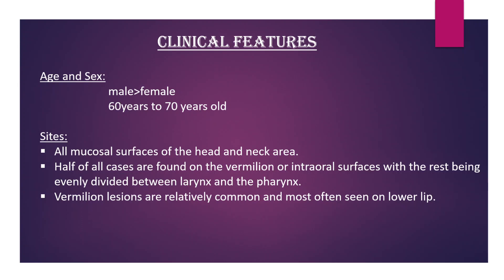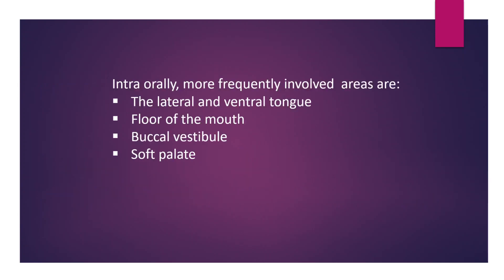Regarding sites, erythroplakia occurs on all mucosal surfaces of the head and neck. Half of all cases are found on the vermilion or intraoral surfaces, with the rest being evenly divided between the larynx and the pharynx. Vermilion lesions are relatively common and most often seen on the lower lip. Intraorally, the lateral and ventral tongue, floor of the mouth, buccal vestibule, and soft palate are the most frequently involved.